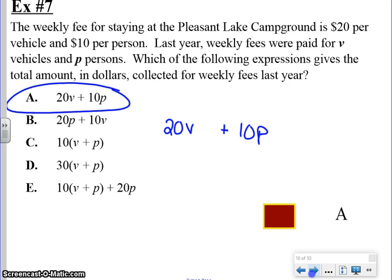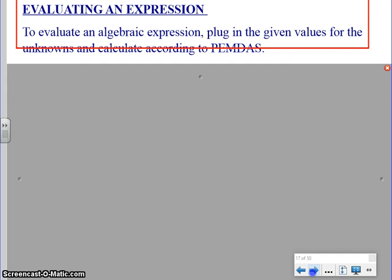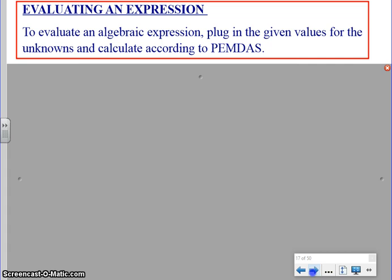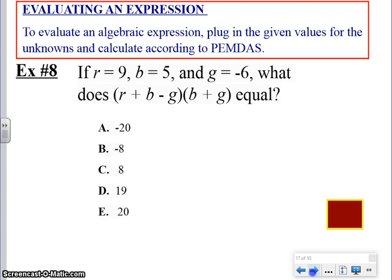We know that we're going to have to pay a certain amount for each vehicle and a certain amount for each person. Those certain amounts are also given to us: $20 per vehicle and $10 per person. That's as simple as this problem is. We just have to be able to take this little paragraph and turn that into an algebraic expression.